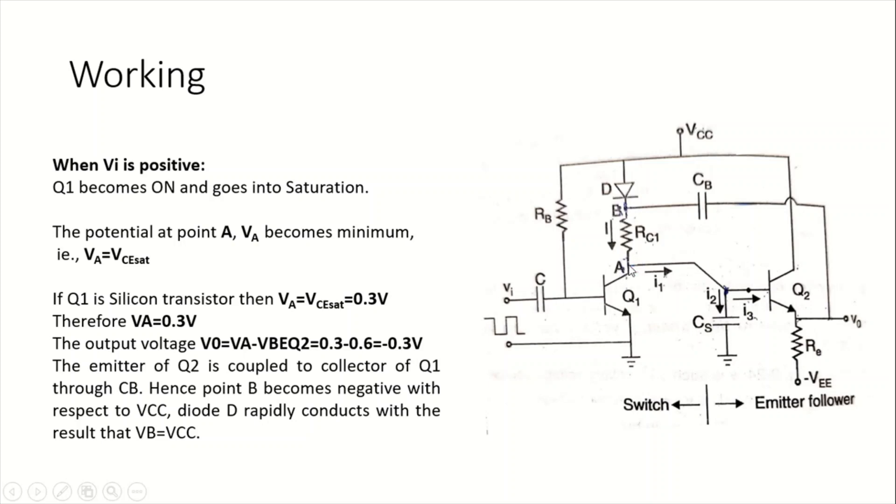The output voltage Vo will be VA minus VBE Q2. That gives you 0.3 minus 0.6, which equals minus 0.3. So when the input signal is positive, we find a negative value here at the output, which is minus 0.3 volts.